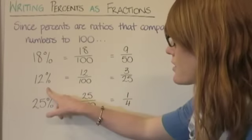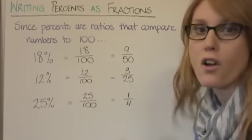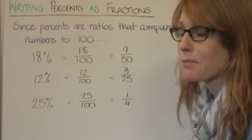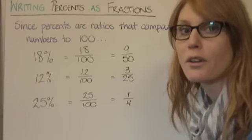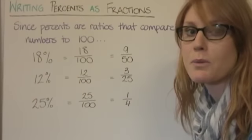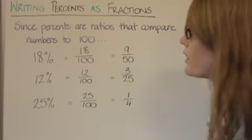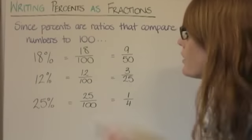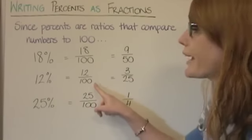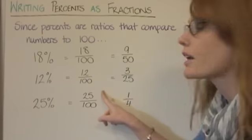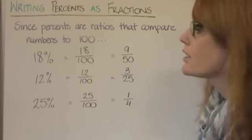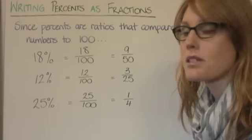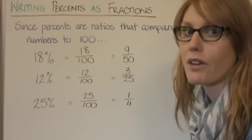12% is the same as 12 over 100. Let's see if we can simplify. The greatest common factor between 12 and 100 is 4. So if we divide the numerator and denominator by 4: 12 divided by 4 is 3, and 100 divided by 4 is 25. So 12% written as a fraction in its simplest form is 3 over 25.